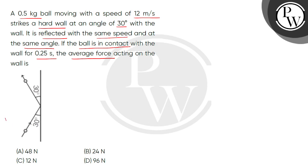Let's see in this diagram, one ball with a mass of 0.5 kg. This is the initial speed of 12 meters per second. When it is 30 degrees with the wall, it is reflected with the same speed. So u is equal to 12 meters per second. And here is the angle given 30 degrees. When the ball is in contact with the wall for 0.25 seconds, we have to find what is the average force on the wall.